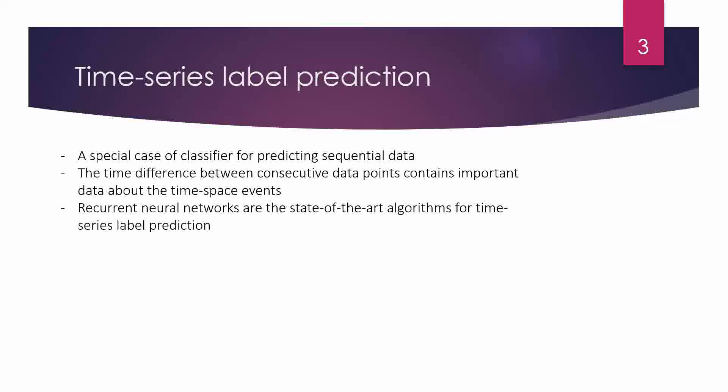What is time series label prediction? Time series label prediction is a special case in classifying sequential data. An important point is that time itself is not just the sequencer of our dataset — it has a concept and contains valuable data for recognition of events in the time space.